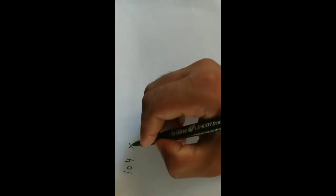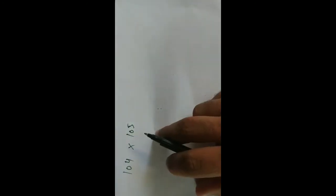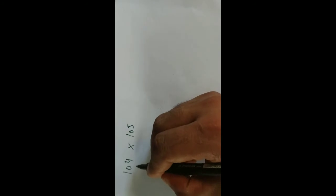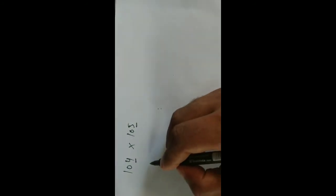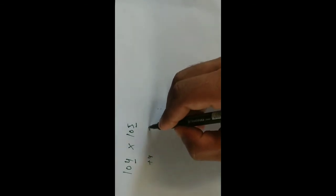104 into 105. What you have to do first is that you have to look at this number and this number from both sides. You have to add plus 4 and plus 5.